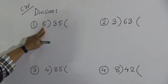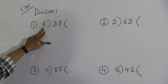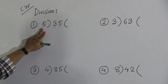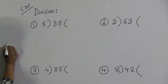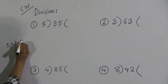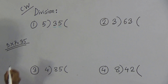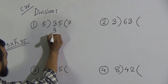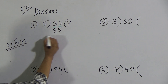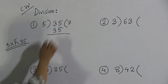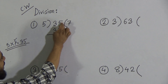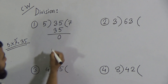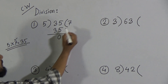Now count the times table of 5 to get 35: 5 ones are 5, 5 twos are 10, 5 threes are 15, 5 fours are 20, 5 fives are 25, 5 sixes are 30, and 5 sevens are 35. So 5 sevens are 35. Write down 35 under the dividend and perform the subtraction. If we subtract 5 from 5 we get 0, and 3 from 3 we get 0, so the subtraction gives 0.